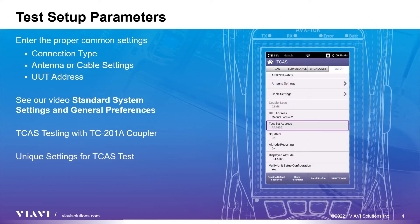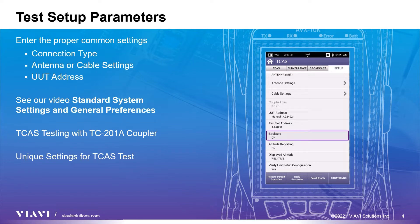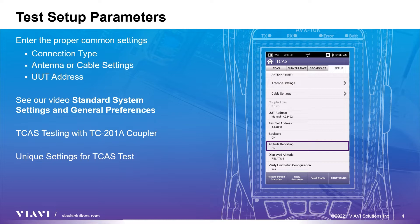The unique settings include test set address, which is simply the hex address of the simulated intruder. This should be anything different than the UUT address. Squidders can be set to on or off and controls whether the test set will only respond to interrogations or will also include squittered information. Typically, this is set to the on condition. Altitude reporting can be set to on or off. This setting determines whether the information supplied by the test set includes altitude data. For successful target generation, this must be left in the on condition.